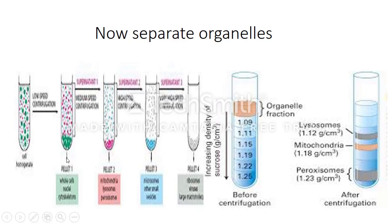There are certain organelles that will be found in each stage, as shown here. In this first pellet, it's showing whole cells, cytoskeletons can be found in this pellet. Mitochondria and lysosomes can be found in this pellet. Microsomes and other small vesicles can be found in this pellet. And ribosomes and viruses and large macromolecules can be found in this pellet.